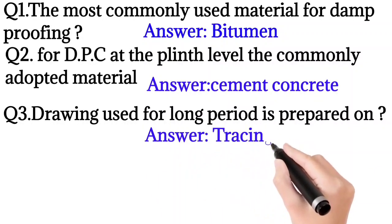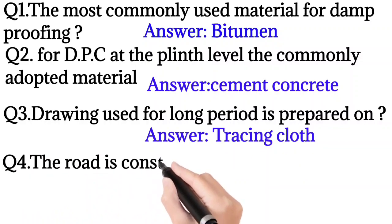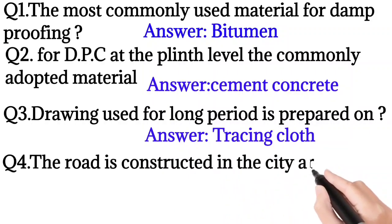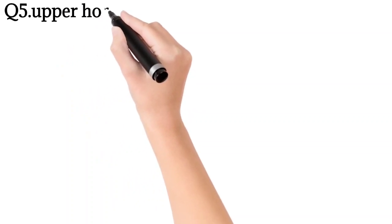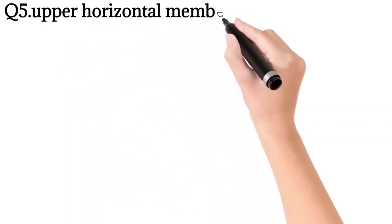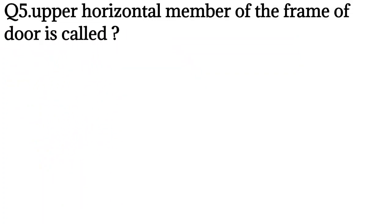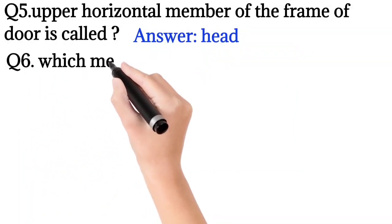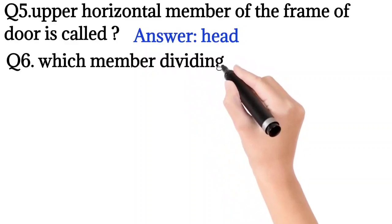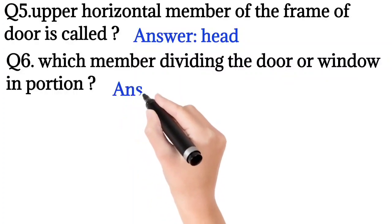Question number 3: Drawing used for long period is prepared on? So the answer is tracing cloth. Question number 4: The road is constructed in the city area? So the answer is urban road. Question number 5: Upper horizontal member of the frame of a door is called? So the answer is head.